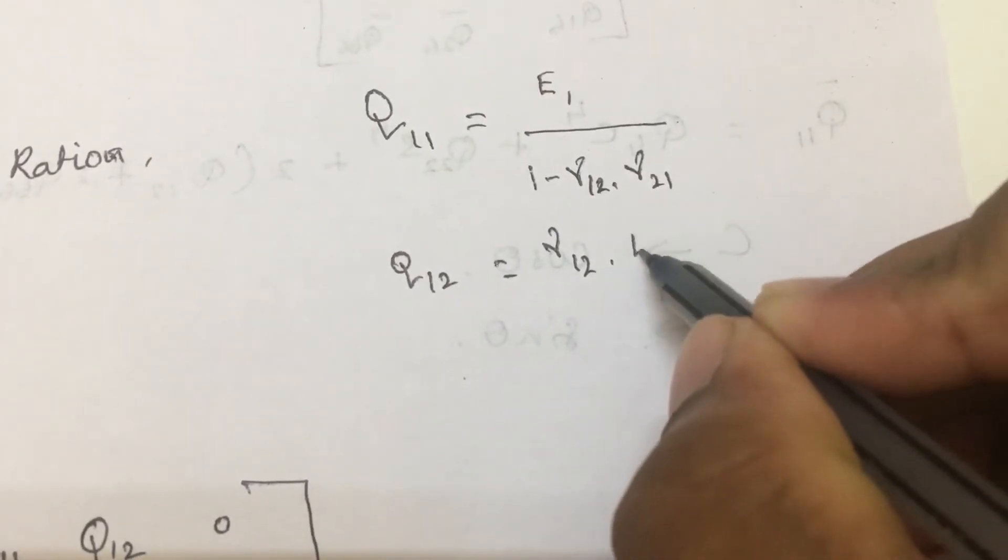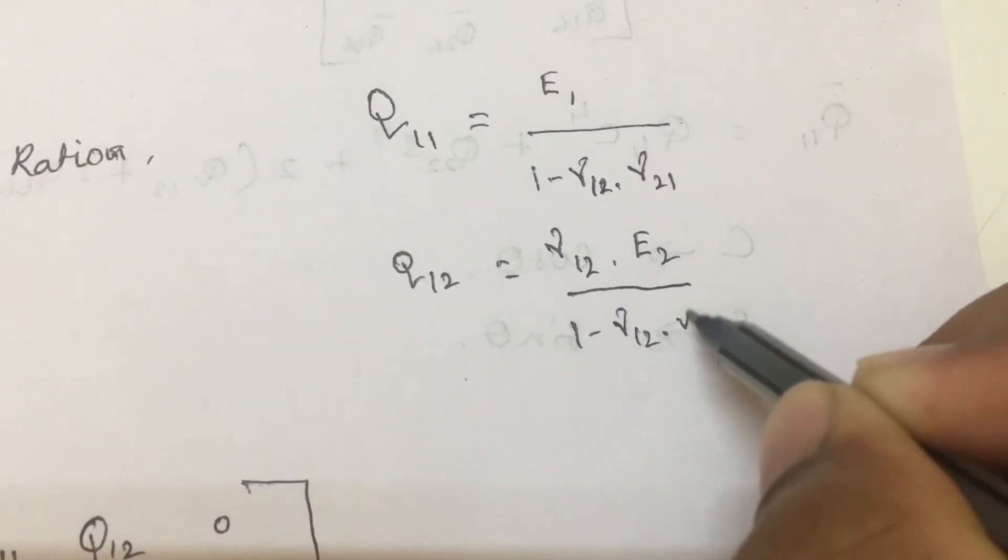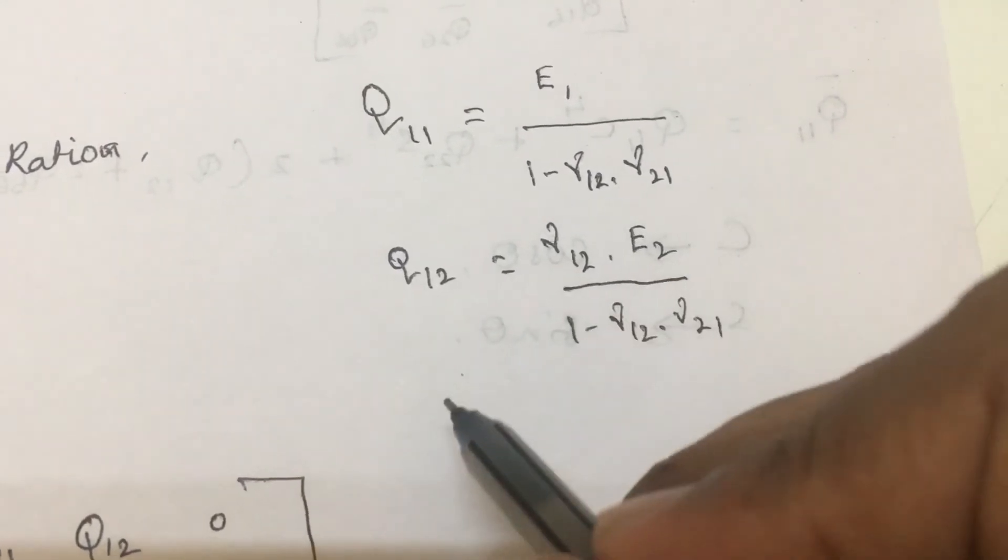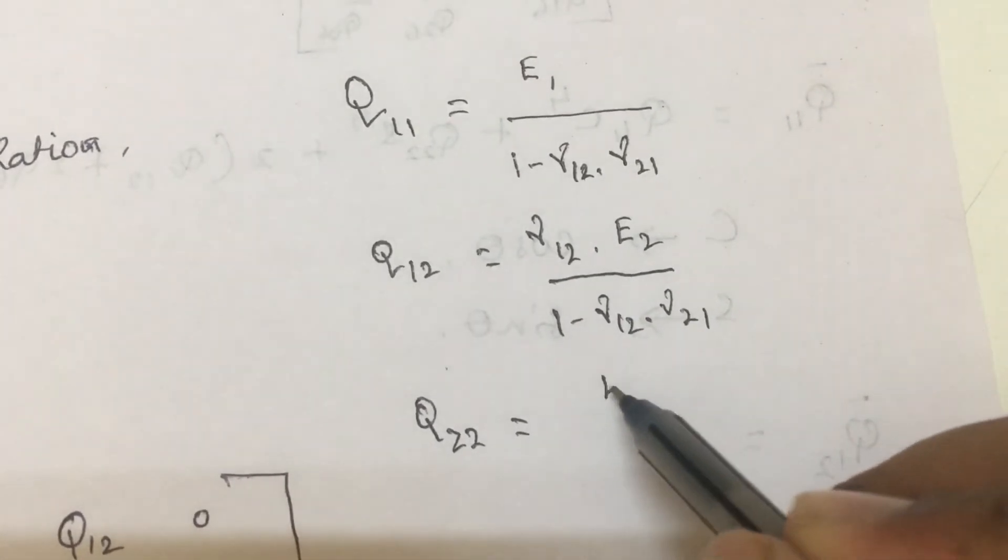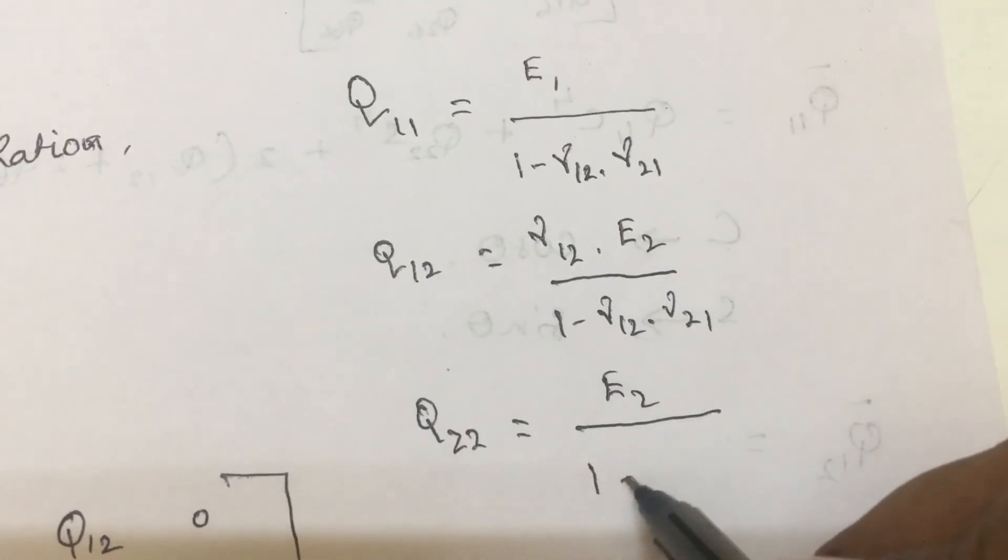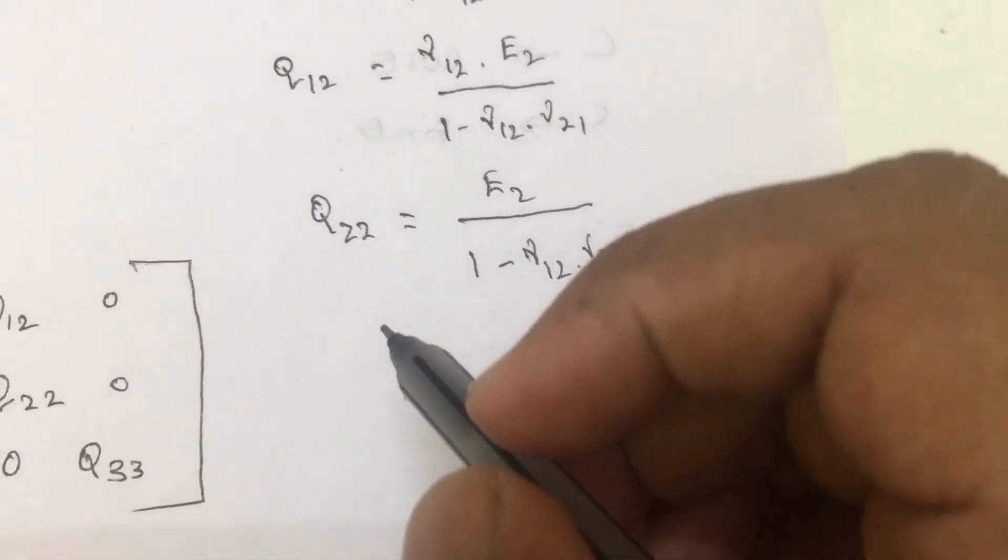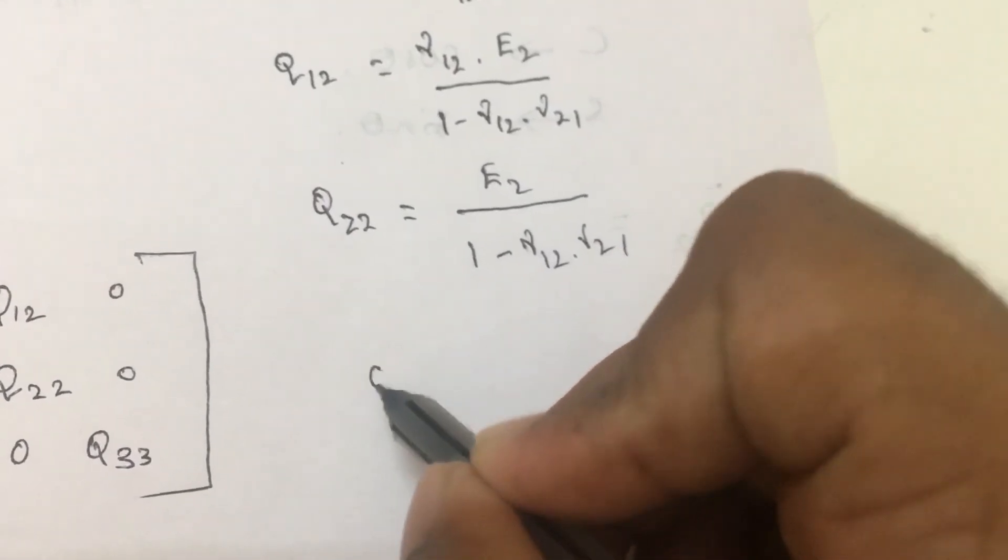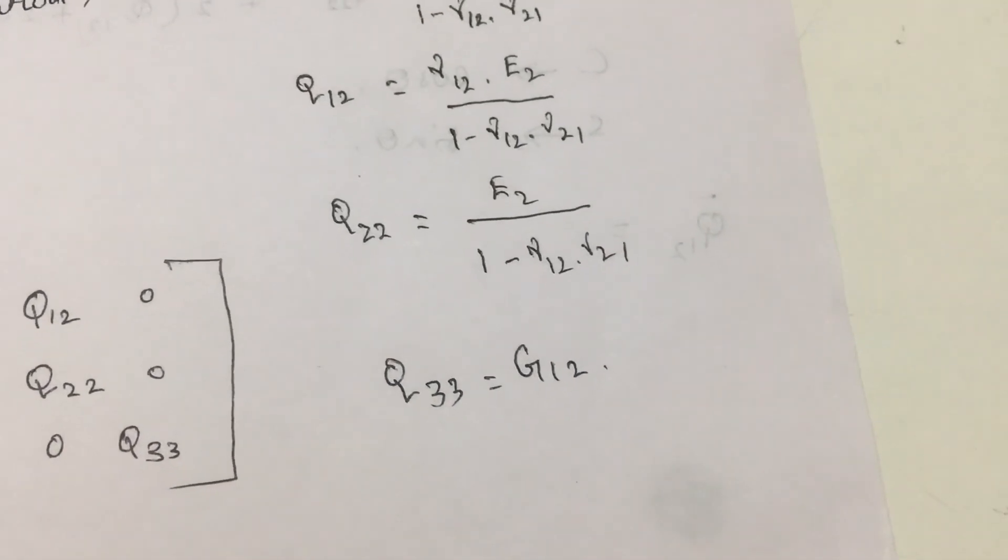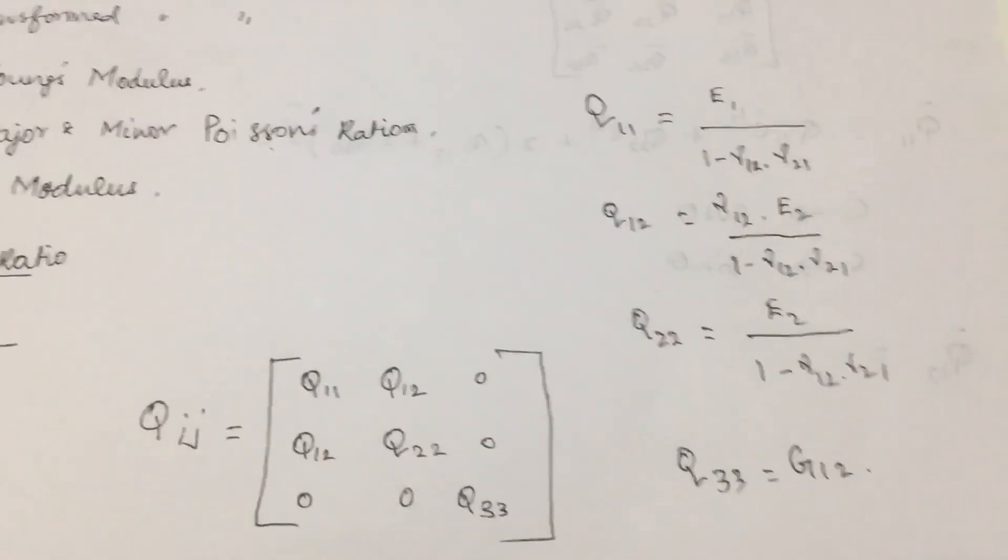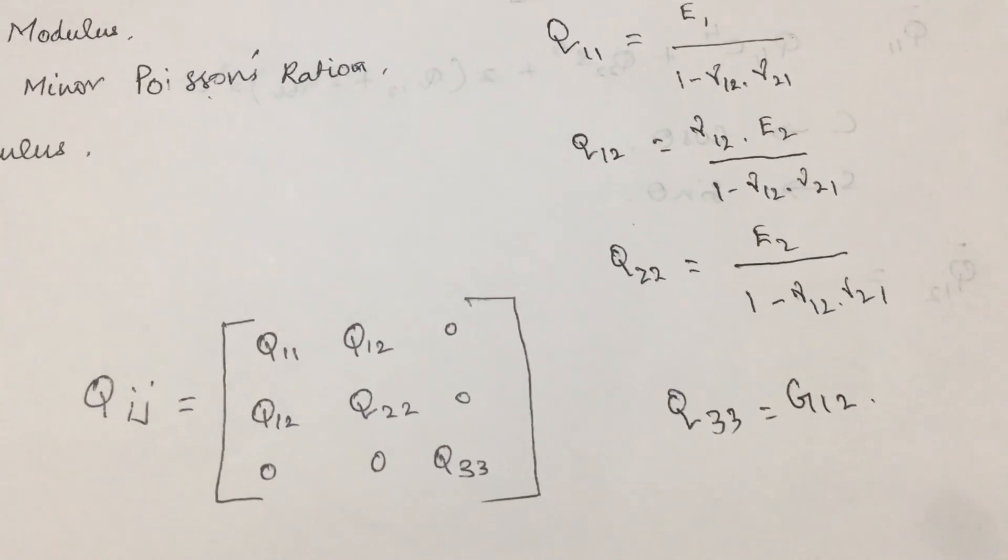Q22 is E2 divided by 1 minus mu12 times mu21. And finally, Q33 is equal to G12. This is the basic required equation for laminated plate theory. From this, we will be able to find out the reduced stiffness matrix.